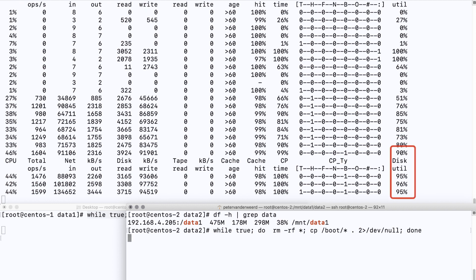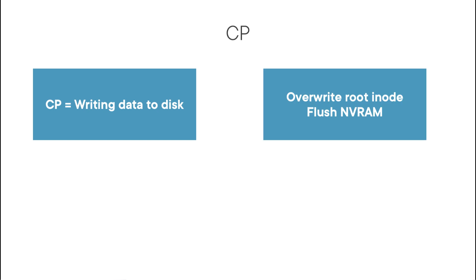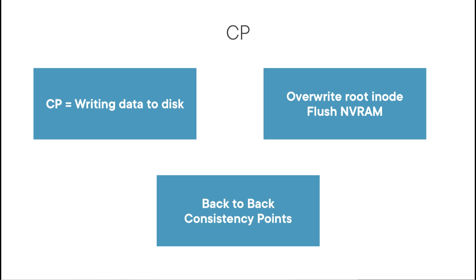So we've seen that the creation of a consistency point means that data is written to disk, and the creation of a consistency point is complete when a new root inode is in place, and NVRAM is flushed. We've also seen that if the writing of a consistency point takes too much time, both NVRAM parts will fill up, and you will get back-to-back consistency points, which is bad for performance.